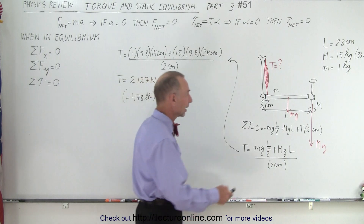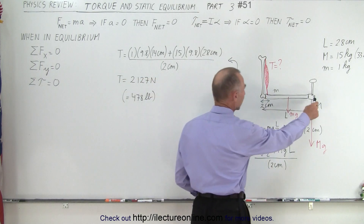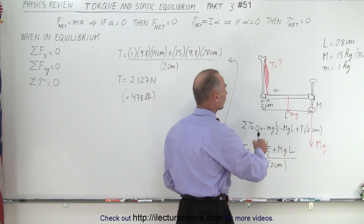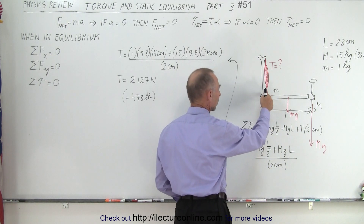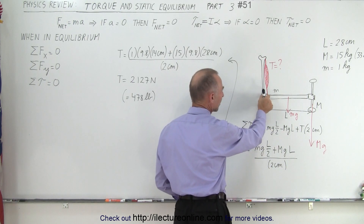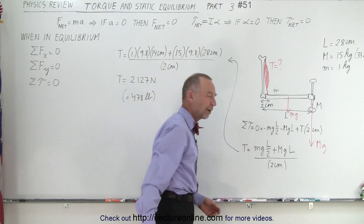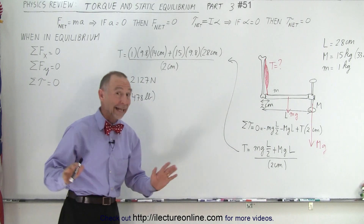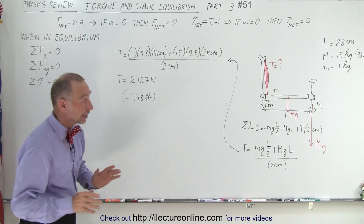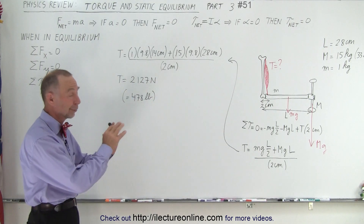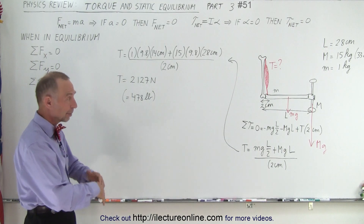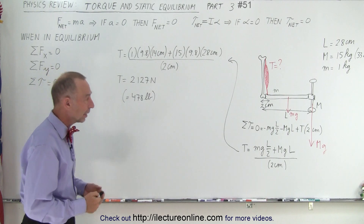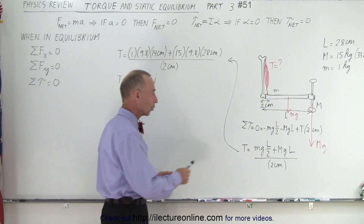Assume that the length of the arm is 28 centimeters, and notice that the bicep is connected here maybe about two centimeters away from the joint. I know that this is not anatomically correct — the real numbers are probably slightly different — but the principle is there.